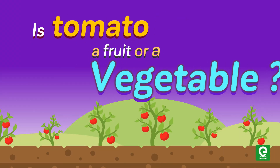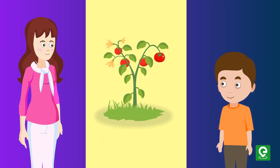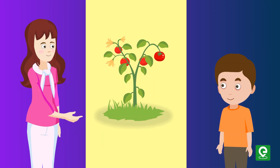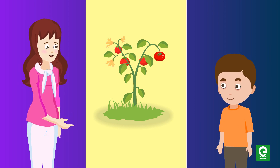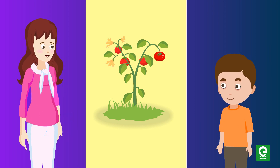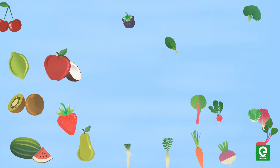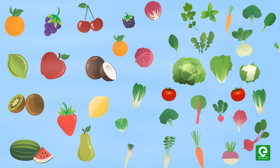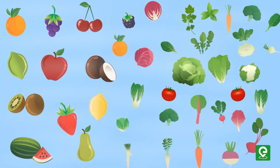Is tomato a fruit or a vegetable? You say tomato is a vegetable, I say tomato is a fruit. Which one of us is right? Before we can figure out exactly what a tomato is, let's first take a look at what fruits and vegetables are.